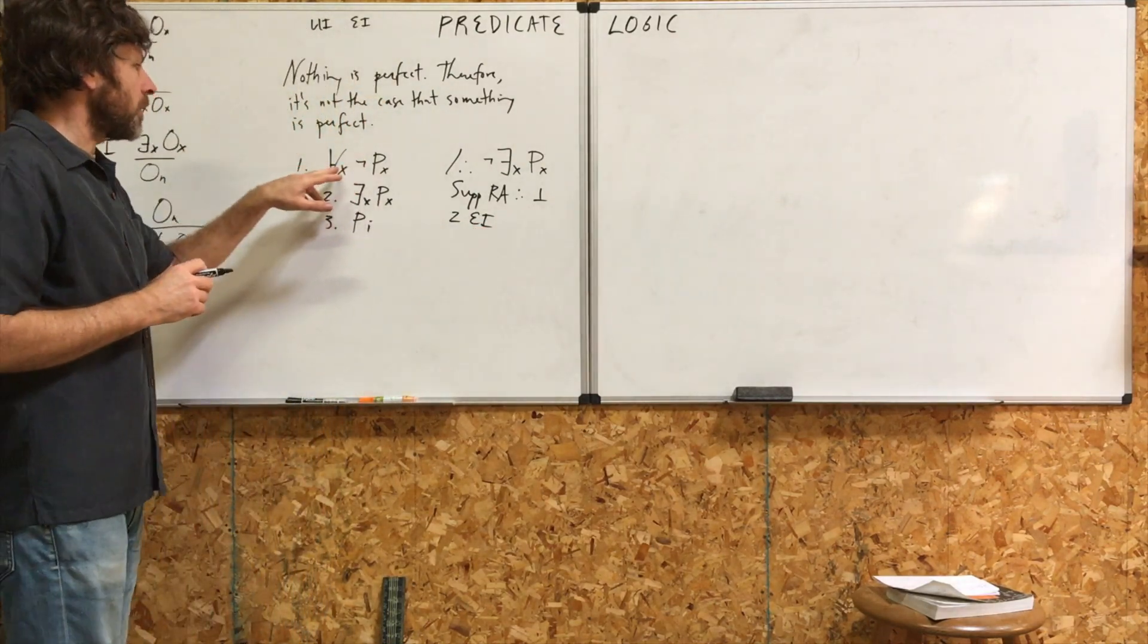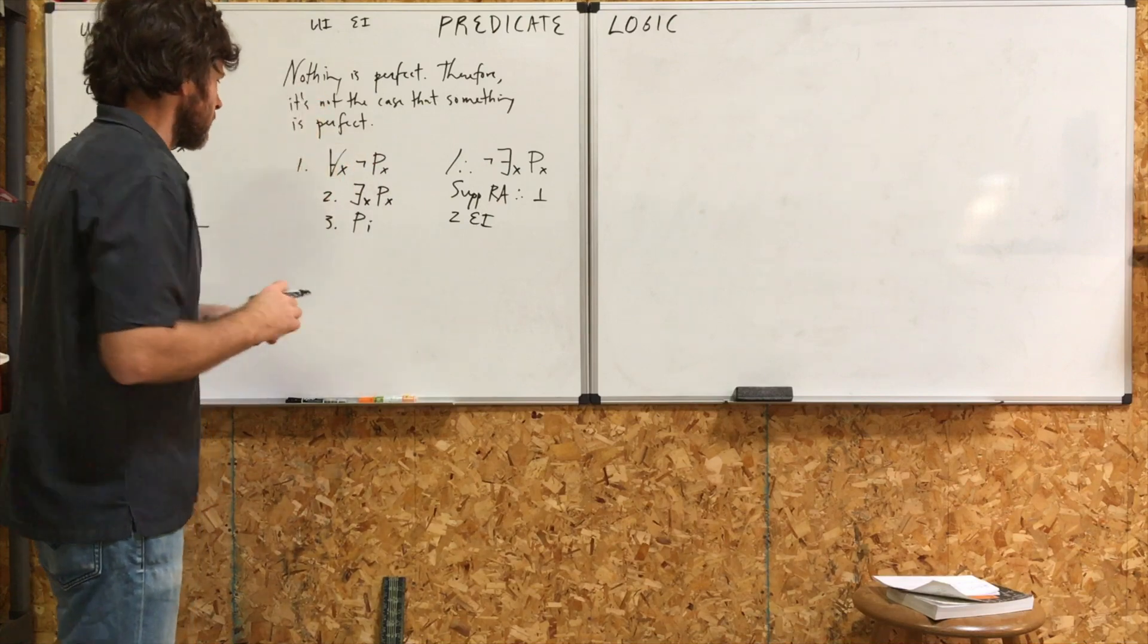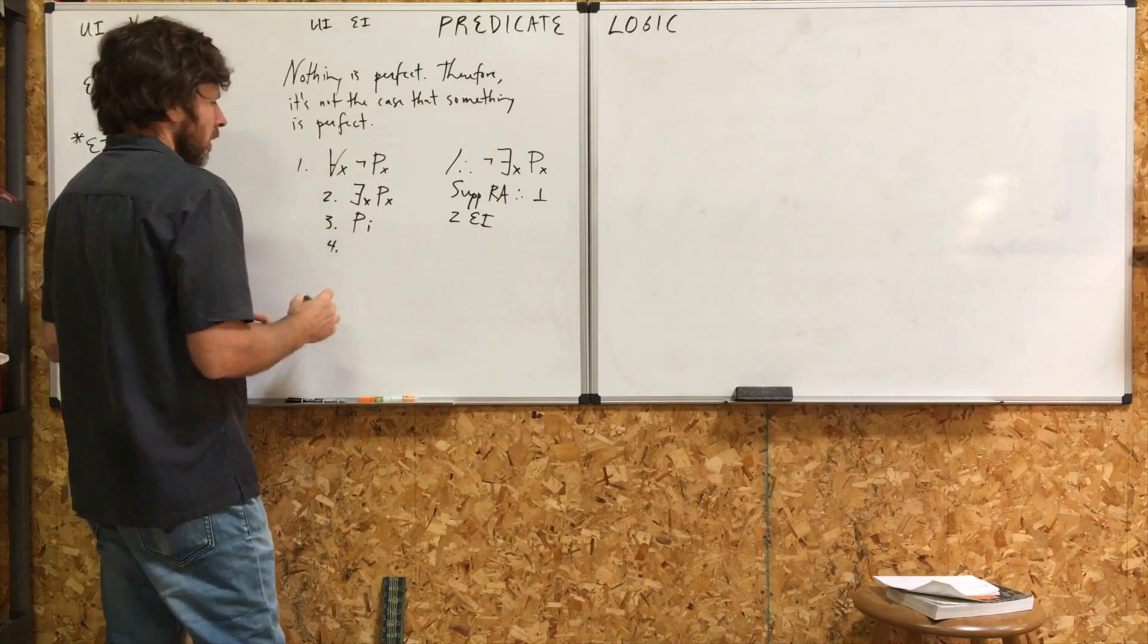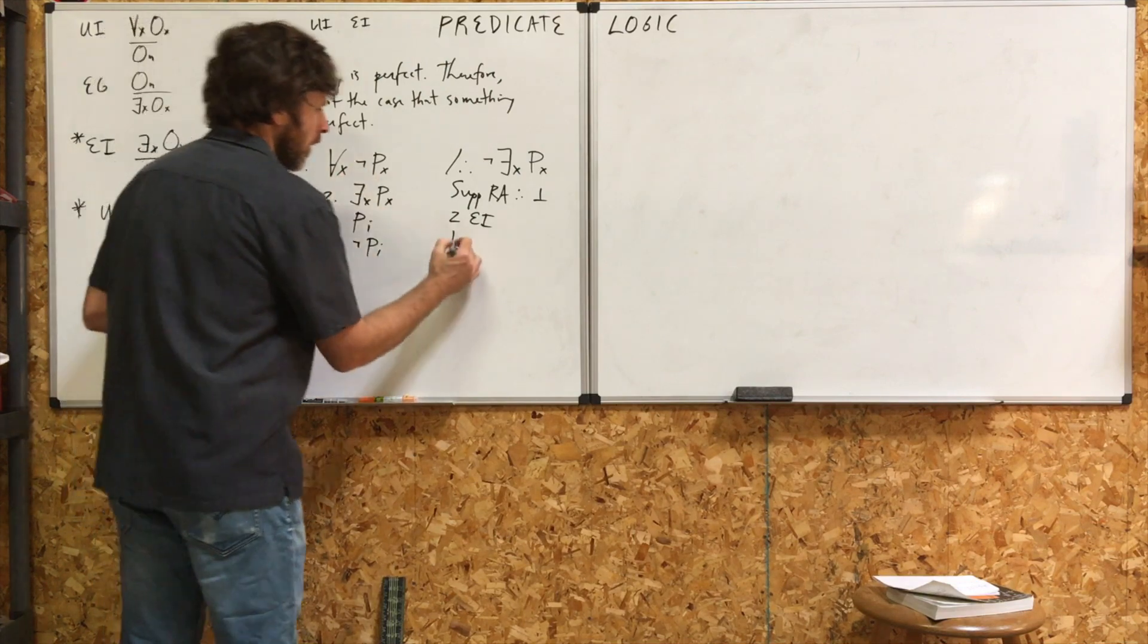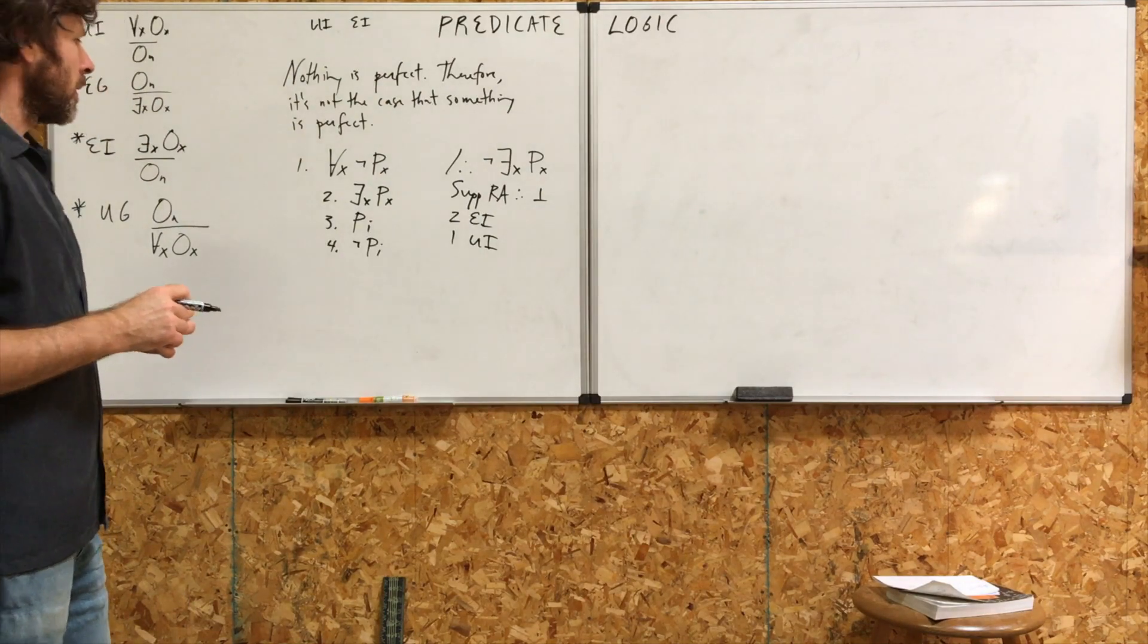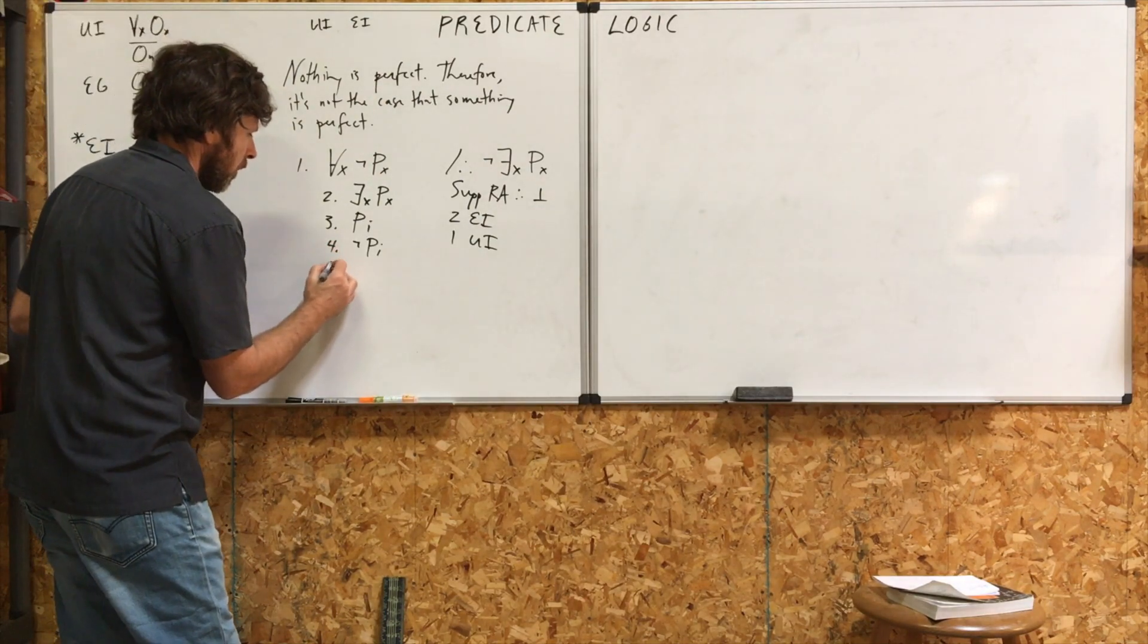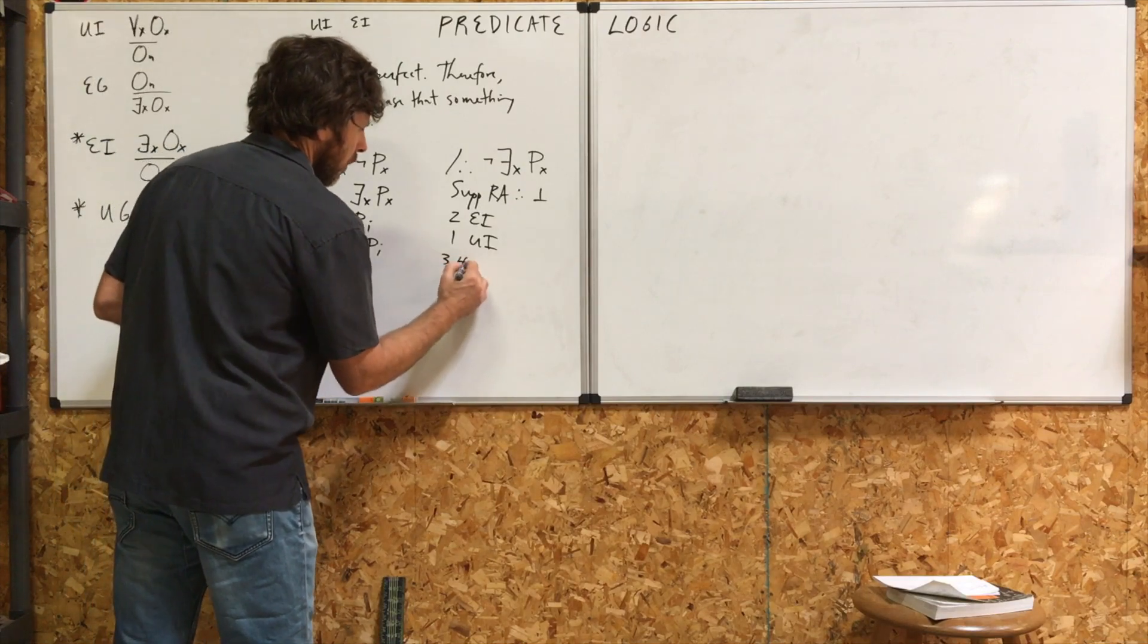Premise one. Nothing is perfect. So, we can say, well, then i is not perfect. One UI. We look at lines three and four, and we see we have a contradiction. Three, four, conge.